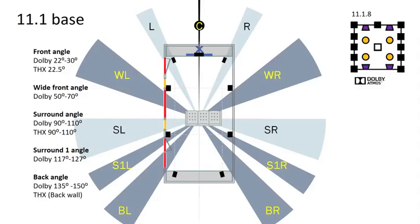With the standard Dolby Atmos 11.1.8 configuration, they have introduced two more channels at ear level labeled surround one. These sit between the surround and back speakers at 117 to 127 degrees. As your brain more easily detects sound in front of you than behind you, I am not convinced these additional channels will do much to enhance the experience. Furthermore, I do not have space to accommodate surround one speakers and will leave these channels off of my long-range plan.